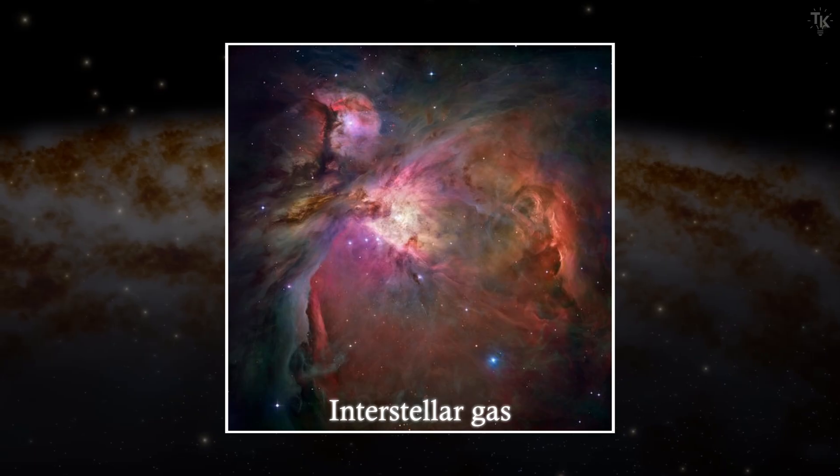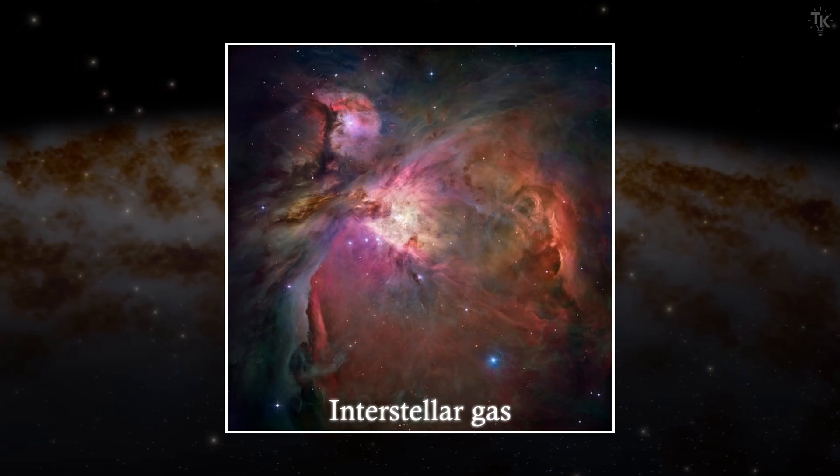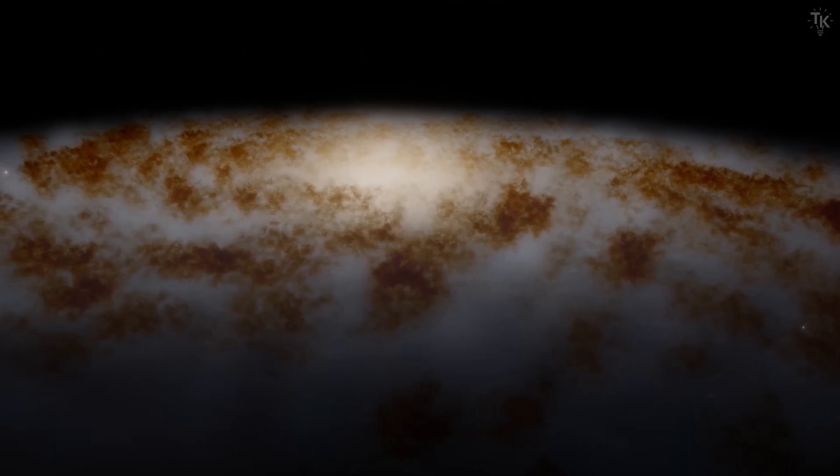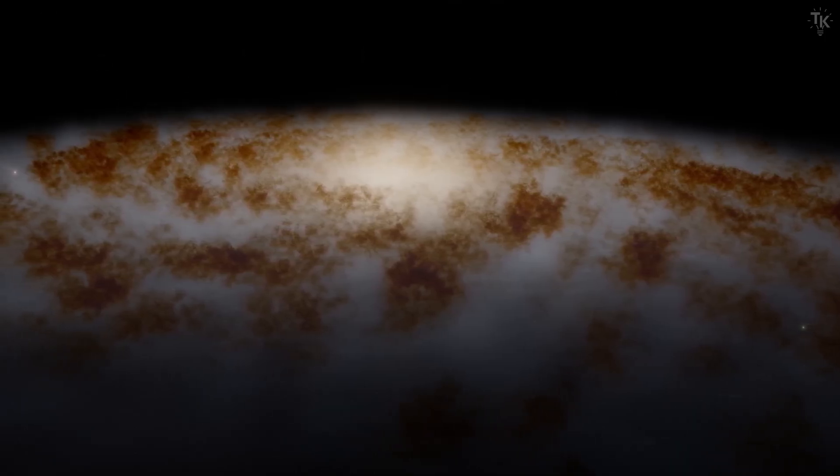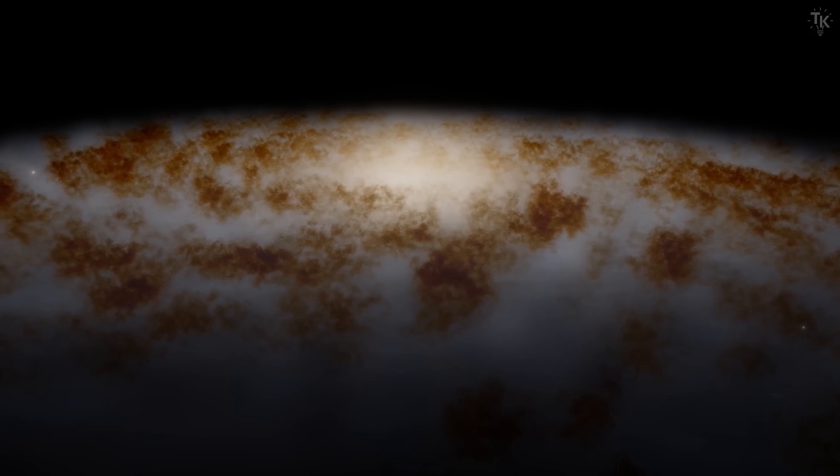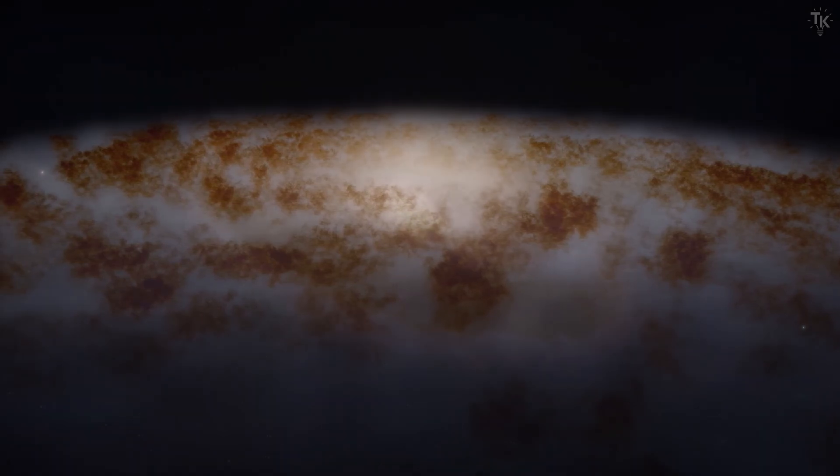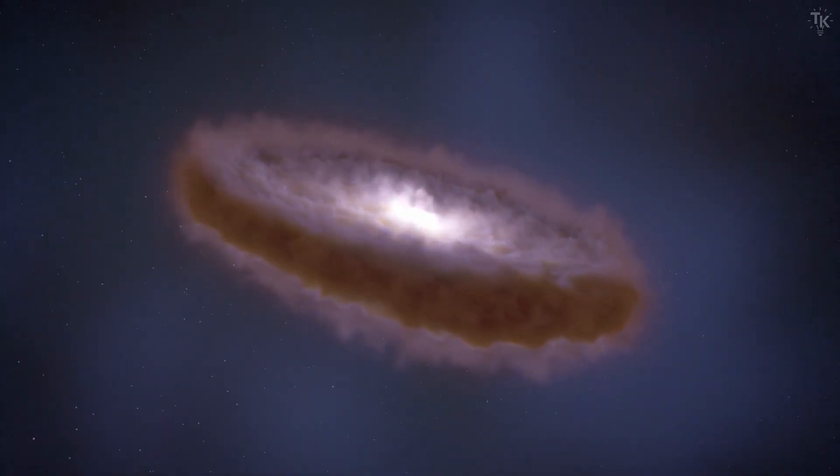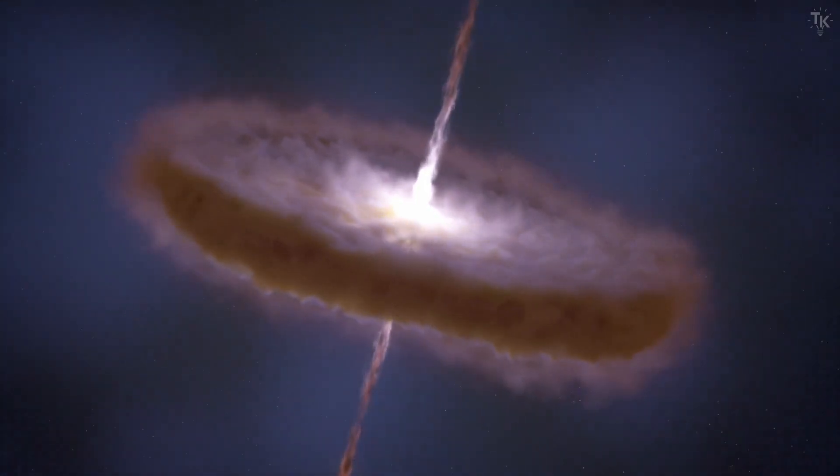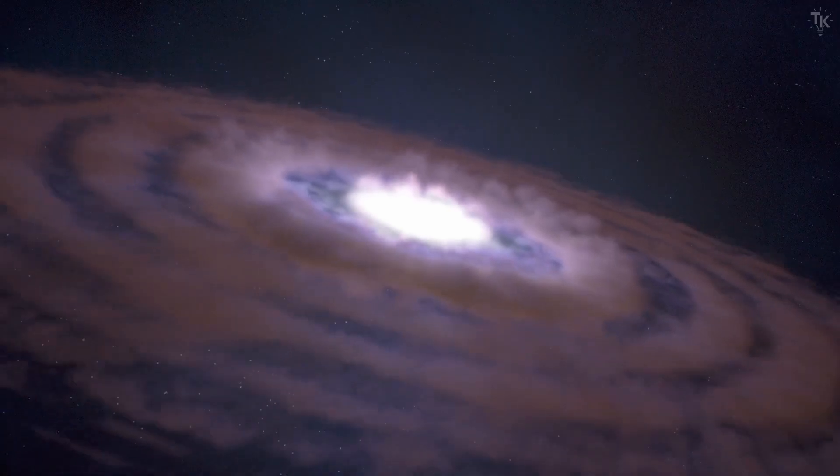Interstellar gas is a thin gas that spreads throughout the galaxy. Let's take a look at it. If we remove the stars and other celestial objects, almost everything left in the image is interstellar gas, and the amount is far greater than one might imagine. When galaxies collide, this gas is compressed. As a result, balance is lost, gravitational collapse occurs, and large numbers of new stars are born.